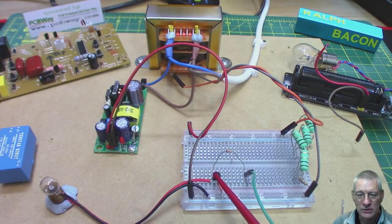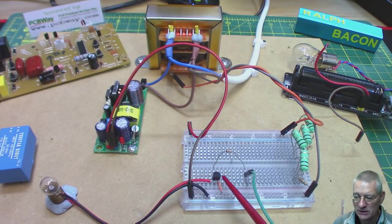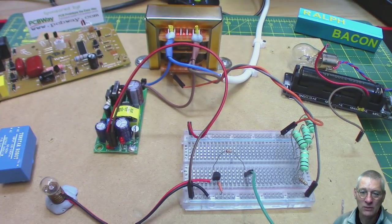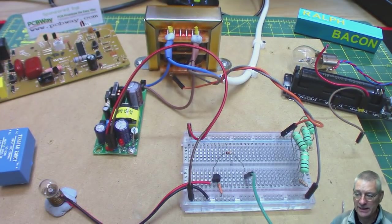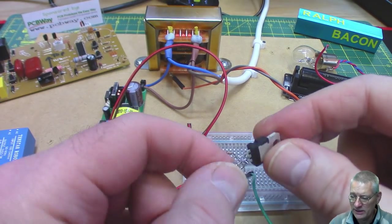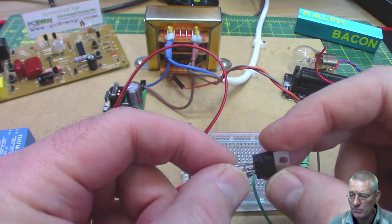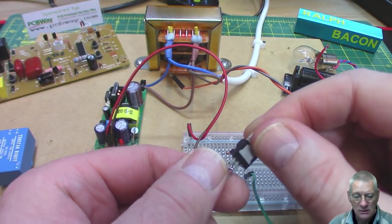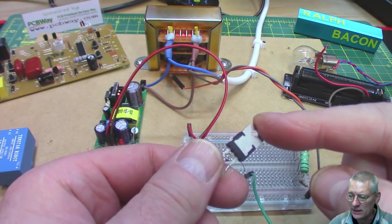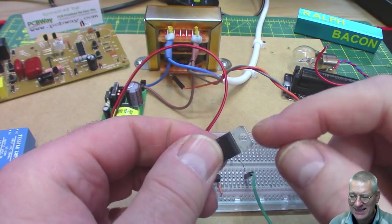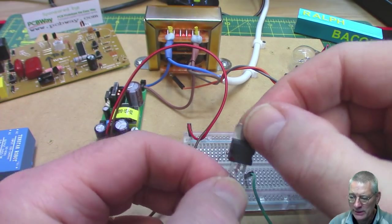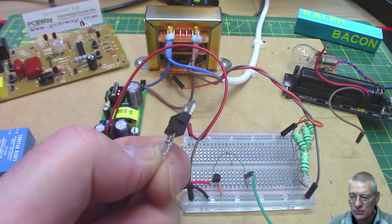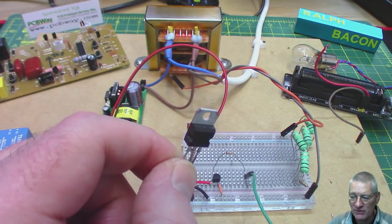Now normally when we're talking about triacs we don't talk about little tiny TO-92 packages like this. We talk about much bigger ones. So something like this which is a standard TO-220 package where one of the terminals is normally connected to this metal tab. That's sort of a power triac that can take several amps.